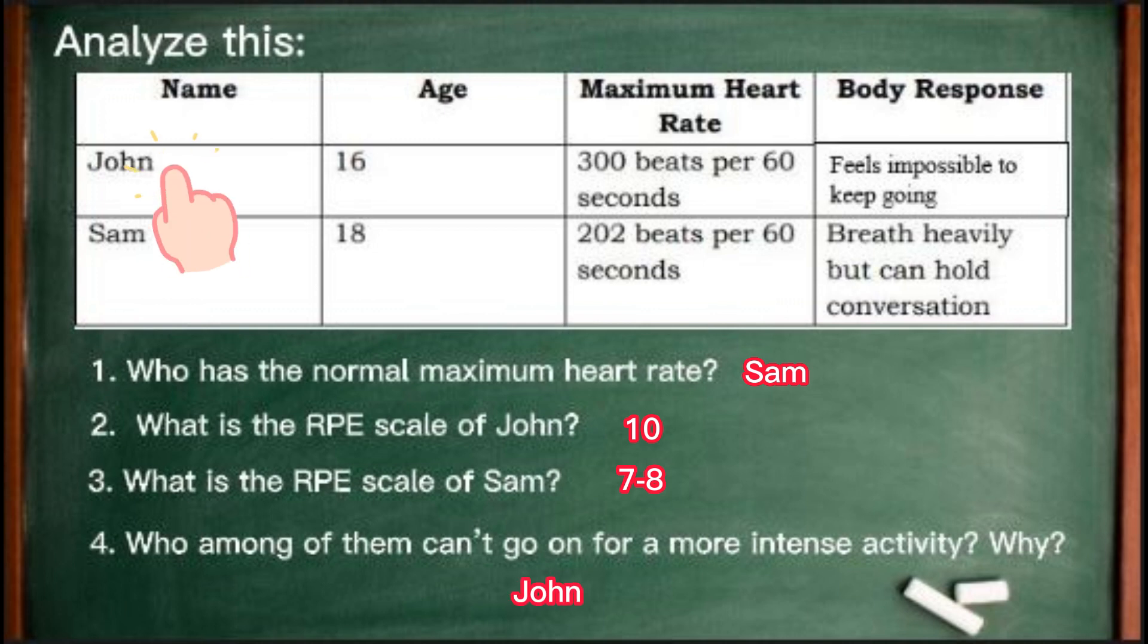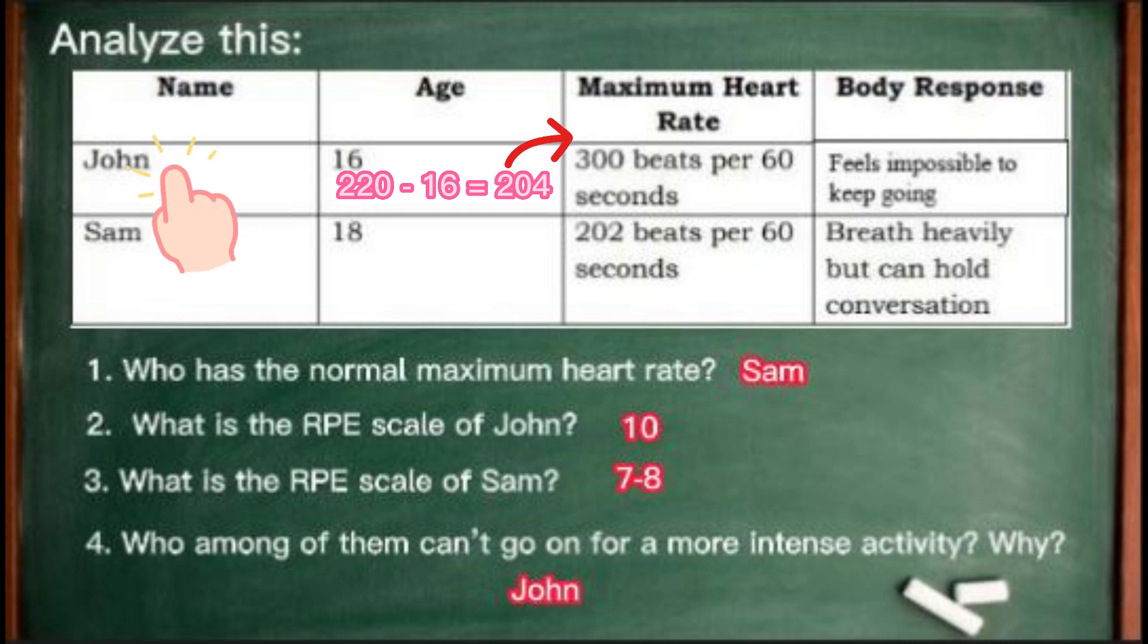It is John who can't go on for intense activity because his heart rate is beyond or greater than the maximum heart rate, and thus he felt like it was impossible to keep going.